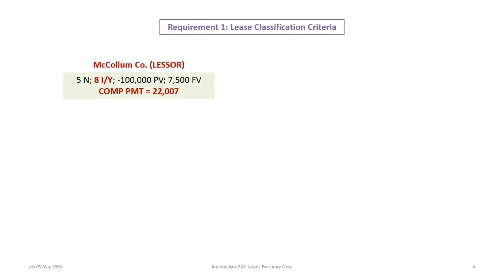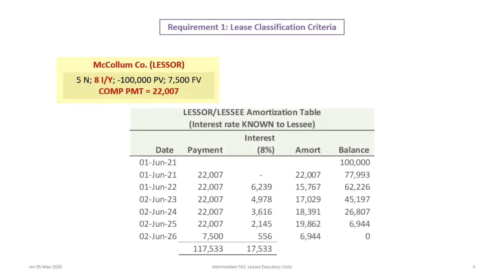In this example the lessor is going to be shown in green. McCollum is the lessor. We have a five-year lease, so 5N, 8IY because we have an 8% interest rate. The equipment is worth $100,000, so negative 100,000 PV, and there is a residual of $7,500. It doesn't matter whether it's guaranteed or not. The result should be $22,007.